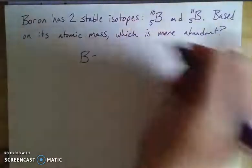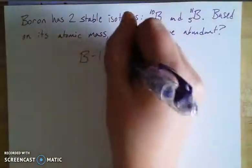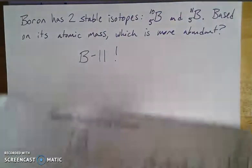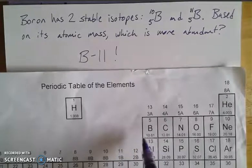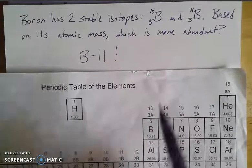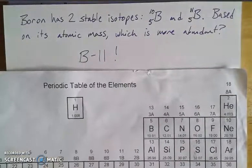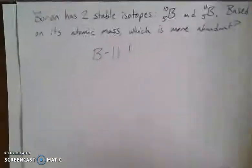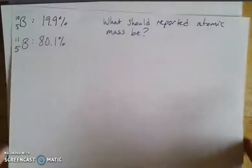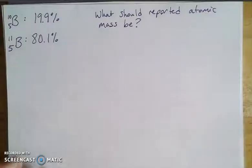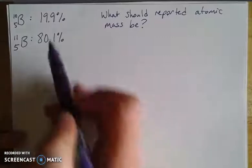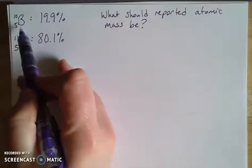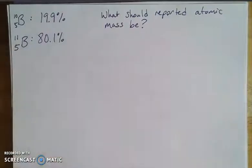Based on the atomic mass of 10.81, which isotope of boron do you think is more abundant? You'd say boron-11, because the weighted average leans closer to 11 than to 10, meaning there must be more boron-11 around. Checking online, I found that boron-10 occurs 19.9% of the time and boron-11 occurs 80.1% of the time.